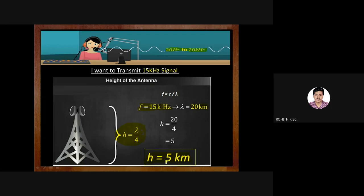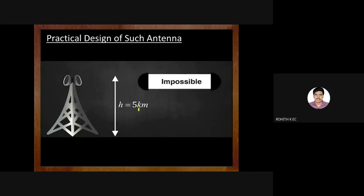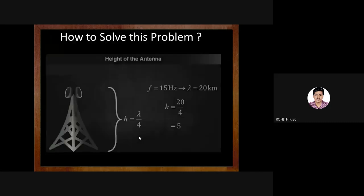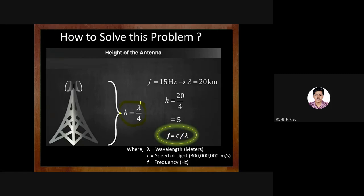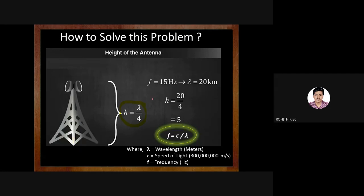So if I want to transmit a 15 kHz audio frequency signal without modulation, the antenna height required would be 5 kilometers — an impossible design. The solution is found by looking at the equation relating frequency and wavelength: f = c/λ, where c is the speed of light. Since h = λ/4, to decrease h I need to decrease λ.